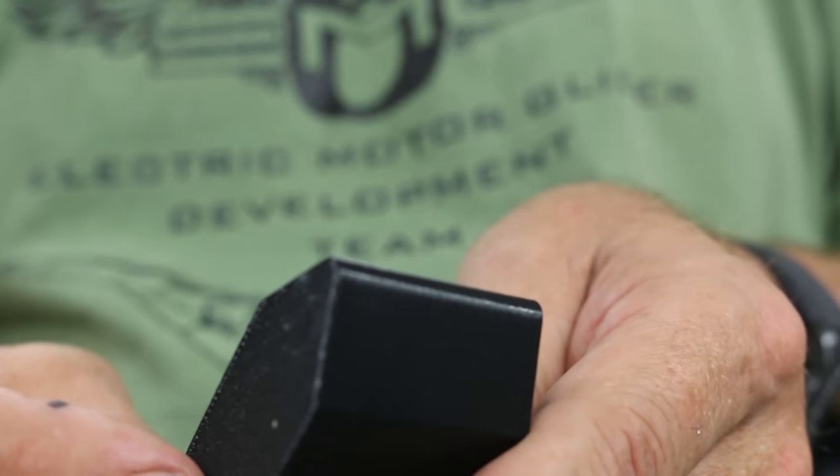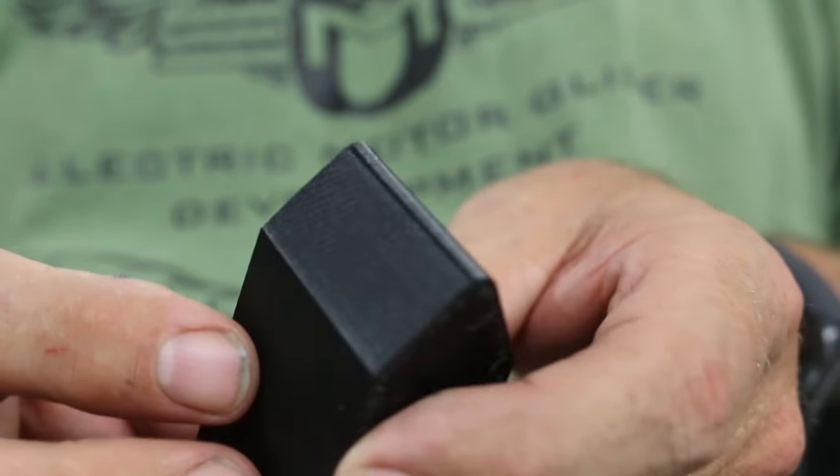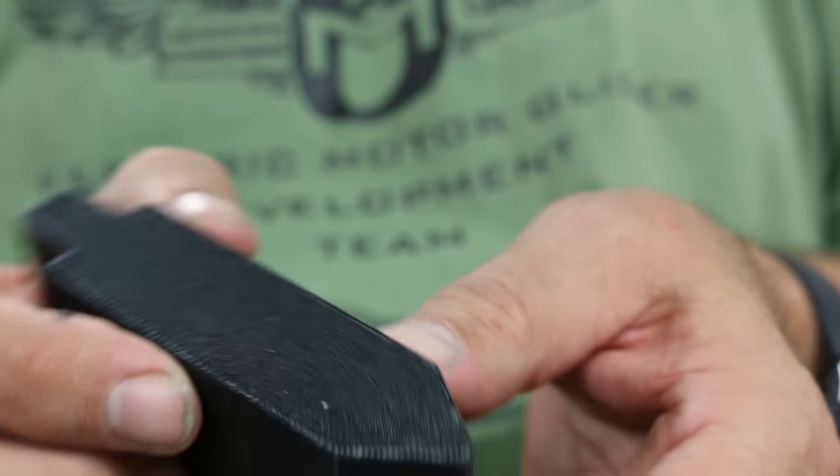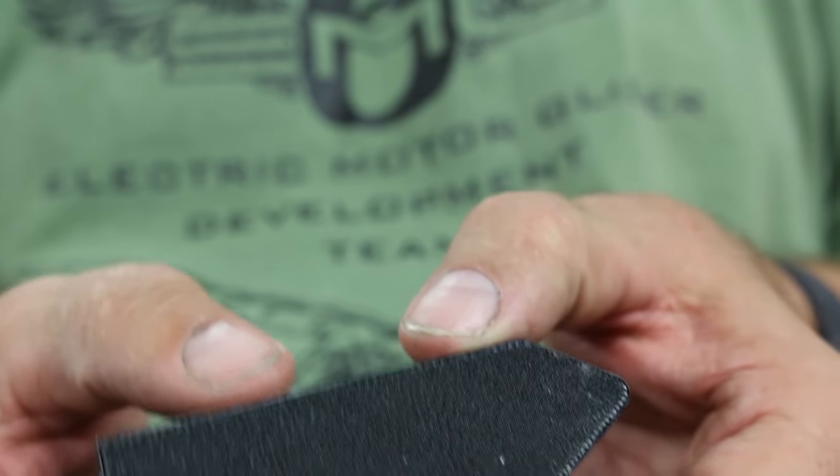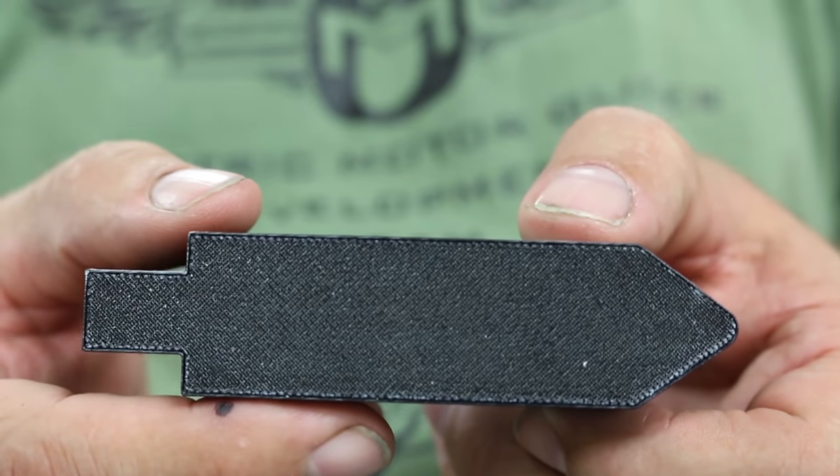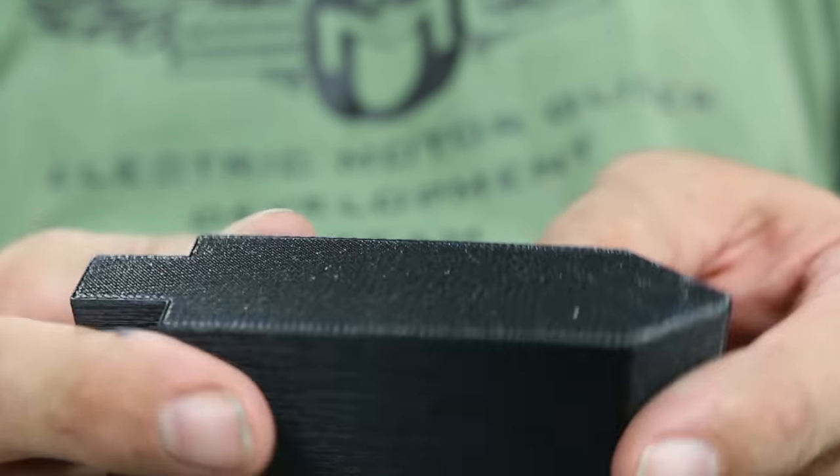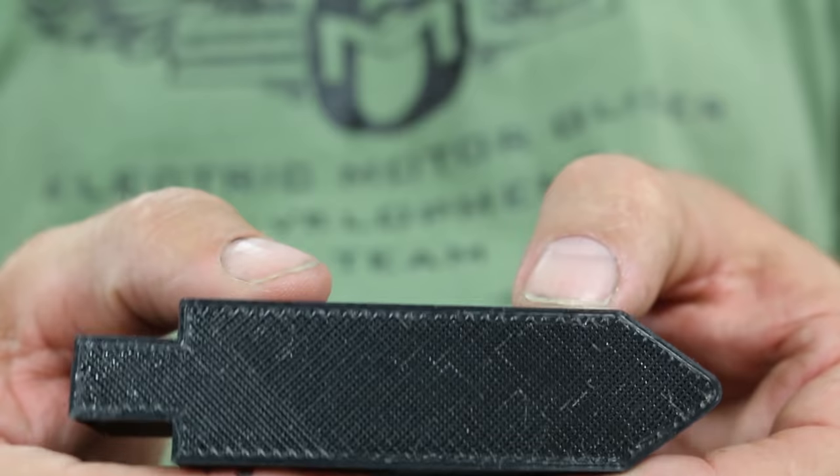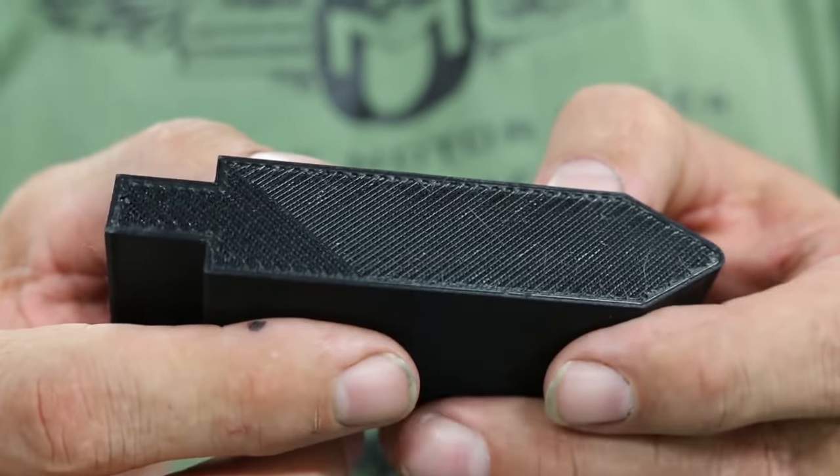You can see the results on this die where we've stopped the printing early to show the infill spacing pattern. On this end we have the face that was attached to the build raft and the platform, and on the opposite side we can see the close proximity of the plastic beads laid down at 45 degree angles that create the infill structure.